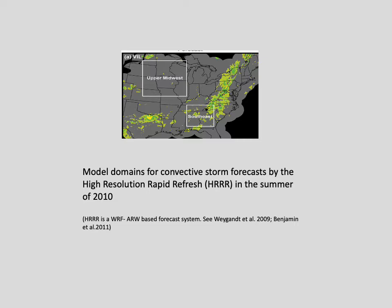At this resolution, it is cloud-resolving and convection-allowing. Forecasts of HRRR over a 3-week period in the summer of 2010 are verified with a focus on precipitation. This slide shows the model domain. Precipitation forecasts in two subregions — the upper midwest and the southeast U.S. — are verified against observations.